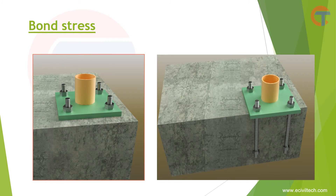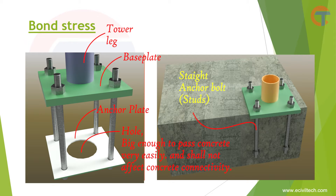Now let's look inside the concrete. Here we are using straight anchor bolts — these bolts are also called studs. We can use an anchor plate over here. An anchor plate is a plate which is connected to the bolt inside the concrete, and its main function is to transfer force from the bolt to the concrete foundation. The anchor plate will be similar to the base plate and will be connected with all four bolts.